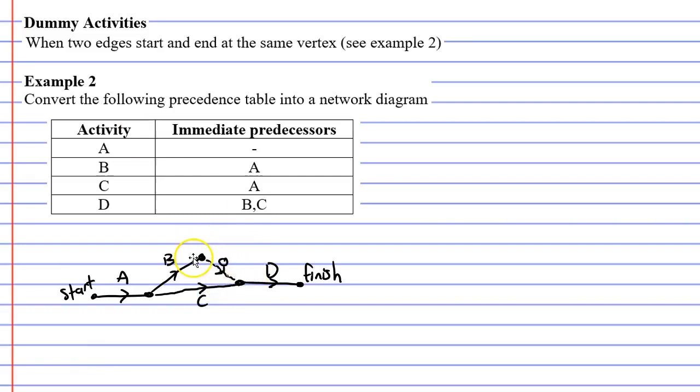Since the weight of the dummy activity is zero, having these two edges here is equivalent to having just a single edge. Now activities B and C are the immediate predecessors of activity D without either of them being a curved edge.